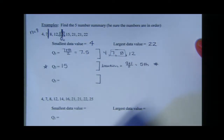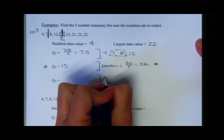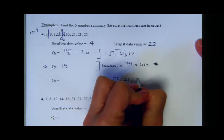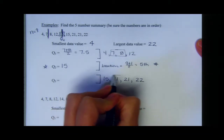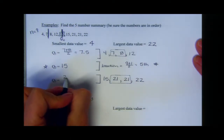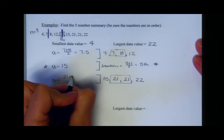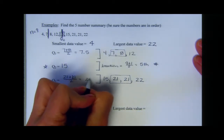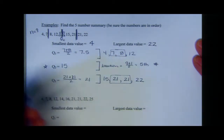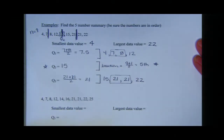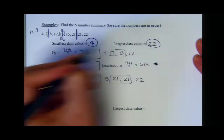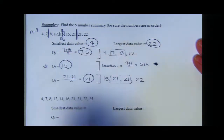To find quartile three, we use the upper half: 15, 21, 21, 22. Wait — we actually use the four numbers above quartile two. The median of those four numbers falls between 21 and 21. Twenty-one plus twenty-one divided by two is 21. So quartile three is 21. My five number summary is: smallest = 4, quartile one = 7.5, quartile two = 15, quartile three = 21, largest = 22.